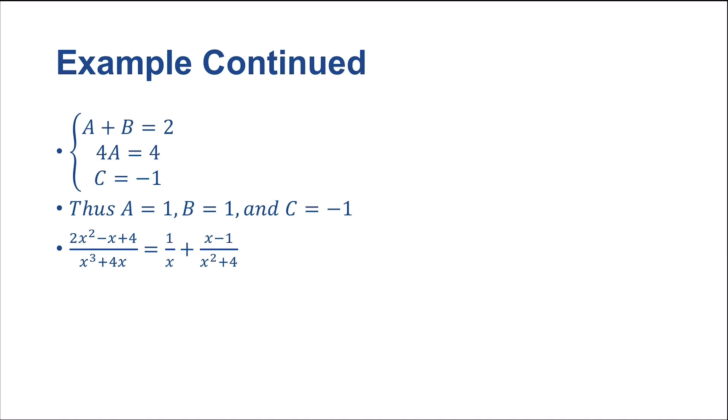All right, so now we know that 2x squared minus x plus 4 over x cubed plus 4x is equal to 1 over x plus x minus 1 over x squared plus 4. Wonderful. Now we are going to do the honor of integrating both sides, and we are going to get that the integral of 1 over x plus x minus 1 over x squared plus 4 dx.